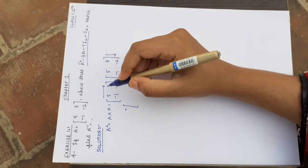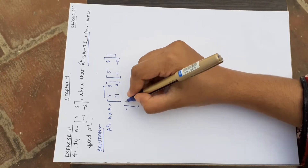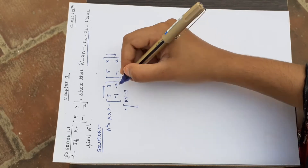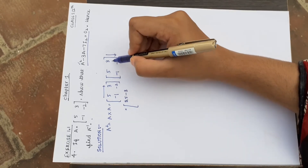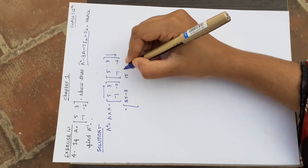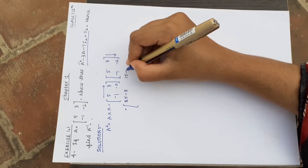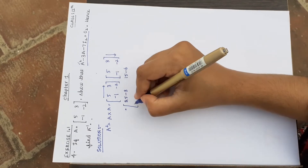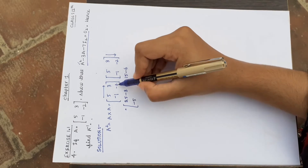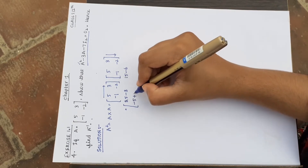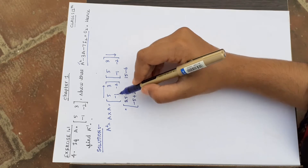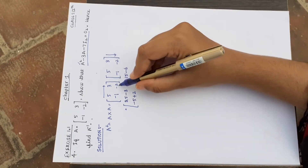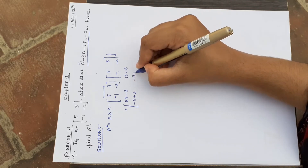First row, first column: 5 into 5 is 25, and 3 into minus 1 is minus 3. First row, second column: 5 into 3 is 15, and 3 into minus 2 is minus 6. Second row, first column: minus 1 into 5 is minus 5, and minus 2 into minus 1 is plus 2. Second row, second column: minus 1 into 3 is minus 3, and minus 2 into minus 2 is plus 4.